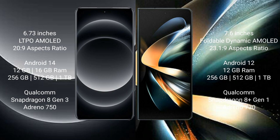Xiaomi 14 Ultra comes with 12GB or 16GB RAM and 256GB, 512GB, or 1TB internal storage. It features a Qualcomm Snapdragon 8 Gen 3 processor with Adreno GPU.